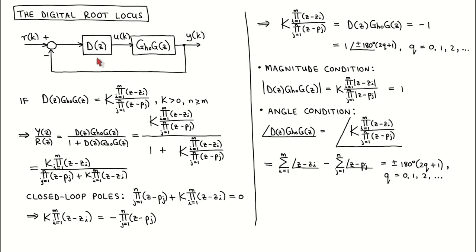For the definition of the digital root locus we start by writing the loop transfer function as a gain k times the product of the factors z minus each zero divided by the product of the factors z minus each pole, where we restrict k to be positive. We assume that the poles and zeros of the loop transfer function are fixed and only the gain k is variable.